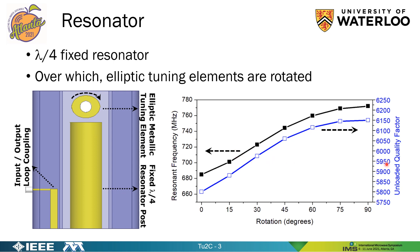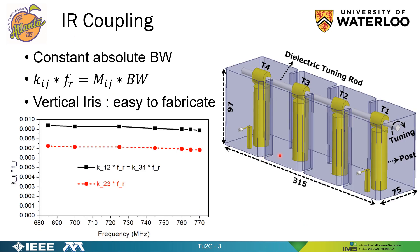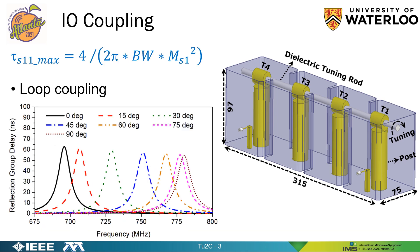The tuning range and the unloaded quality factors are presented. For inter-resonator coupling, we employed a vertical iris which is easy to fabricate. It satisfies the criterion to maintain constant absolute bandwidth — that is, the product of the physical coupling coefficient and the resonant frequency must be constant over the tuning range. For input-output coupling, we used loop coupling. To maintain constant absolute bandwidth, the reflection group delay must be constant over the tuning range, which is reasonably met by the loop coupling.